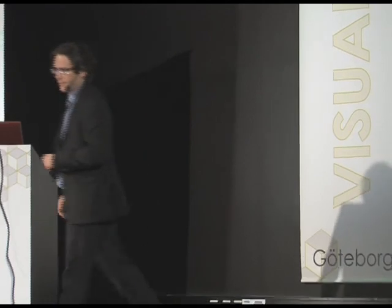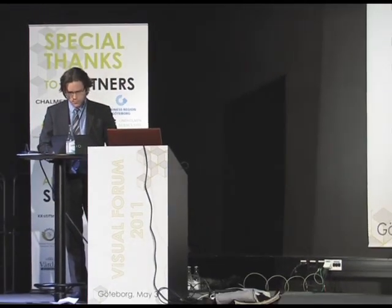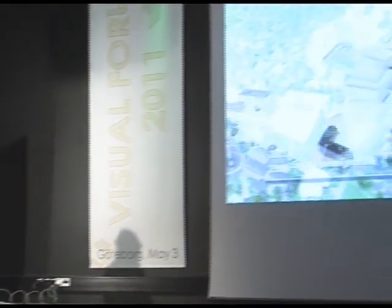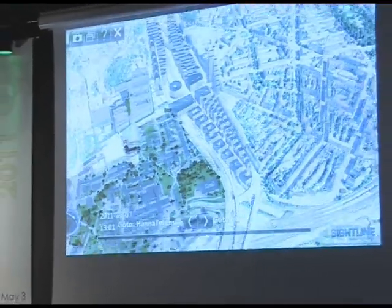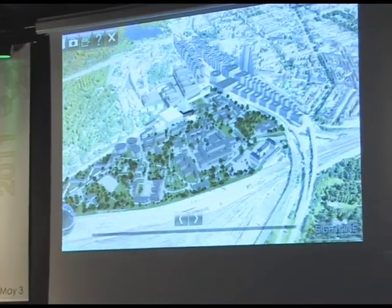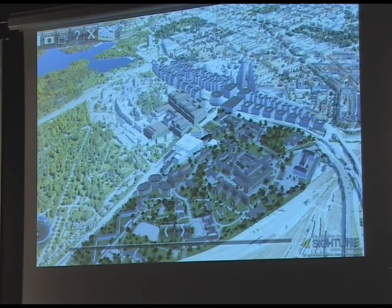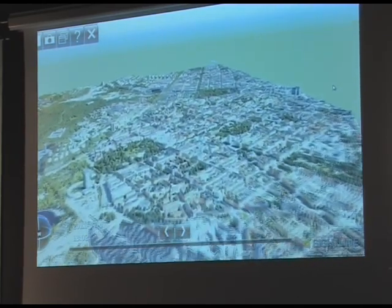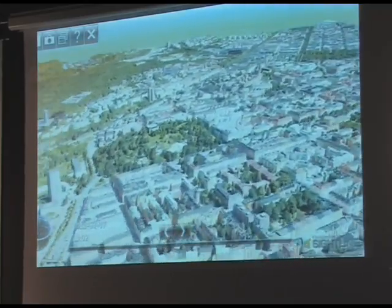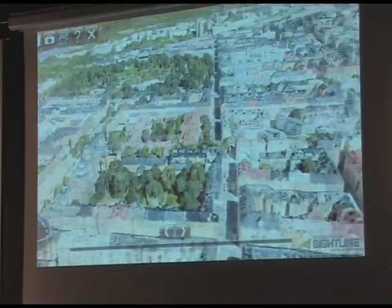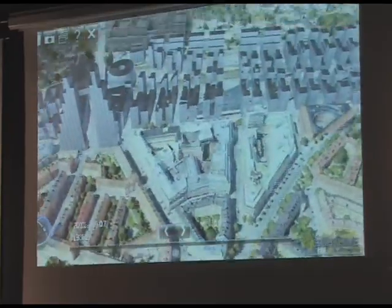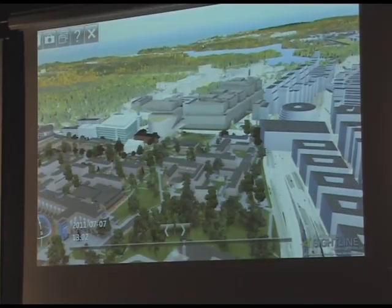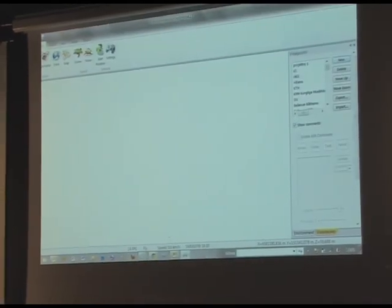Tittar vi på ett snabbt exempel här på en modell, över Hagastaden och Karolinska institutet — norra Stockholm. I grund och botten är det det man kallar virtual reality, alltså interaktiv visualisering, där man kan göra en massa olika saker i miljön. Det som är det befintliga här är fotoscannat i 3D av en svensk leverantör, en avknoppning från Saab, som har utvecklat den här scanningsteknologin. Och det här är planerade Hagastaden, ett stort projekt i Stockholm.